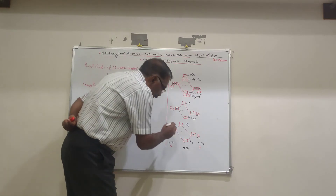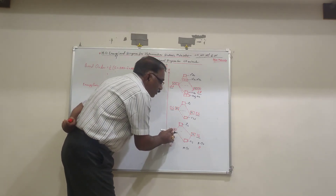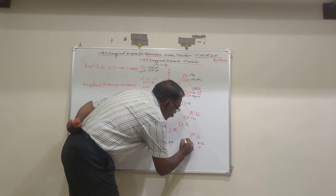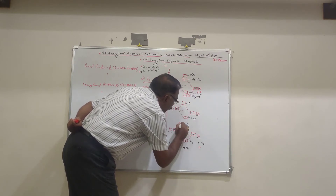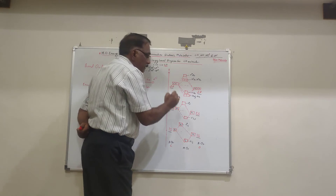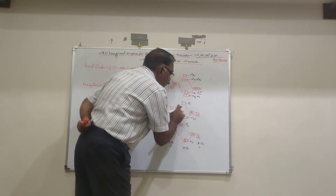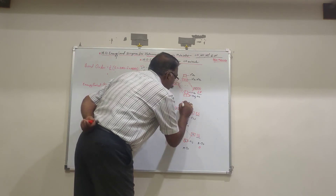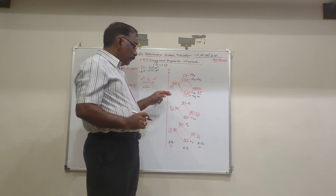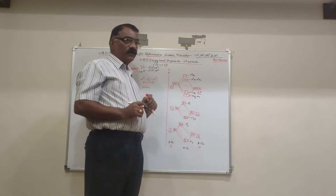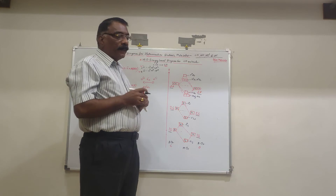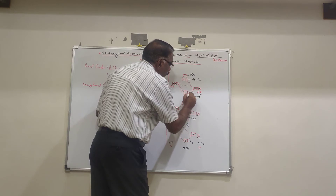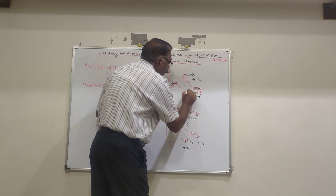Now we fill the electrons into the molecular orbitals. From the 1s orbitals, there are 2 electrons from carbon and 2 from oxygen, giving 4 electrons that fill σ1s and σ*1s. For the 2s, again 4 electrons fill σ2s and σ*2s. For the 2p orbitals, there are 2 electrons from carbon and 4 from oxygen, giving 6 electrons that fill the remaining molecular orbitals 1 through 6.